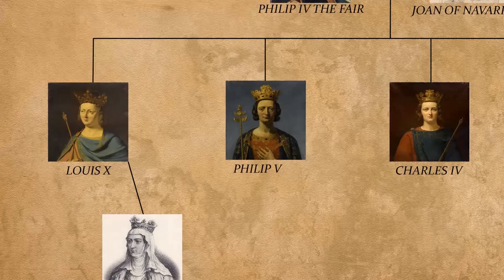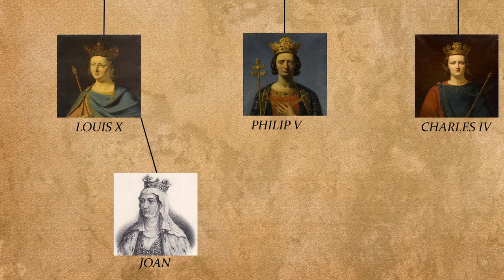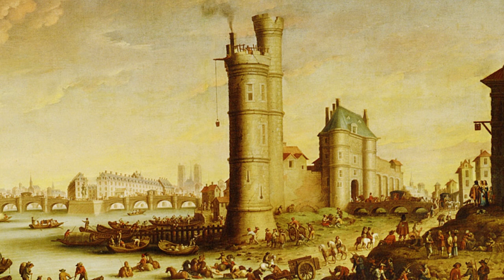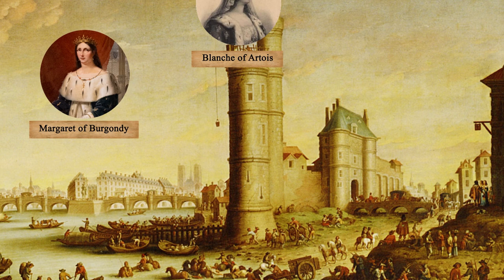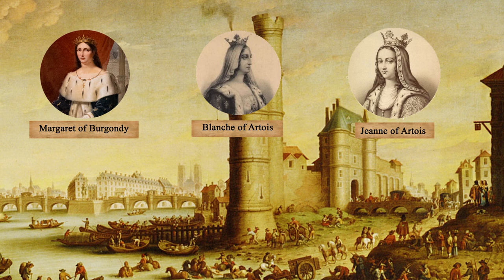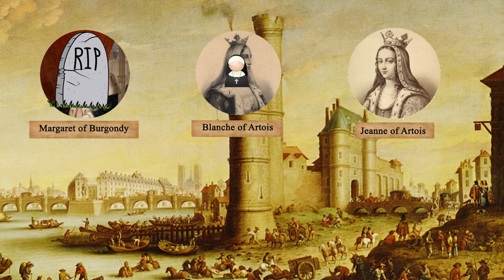The eldest son, Louis, future Louis X the Quarrelsome, was married to Margaret of Burgundy and had only one daughter, Joan. Then a royal scandal erupted — the Affaire de la Tour de Nesle. The three daughters-in-law of the King were caught in adultery. Princesses Margaret of Burgundy and Blanche of Artois had taken two young squires as lovers. The third, Jeanne of Artois, wife of Philip the Tall, was not involved but was aware. The two squires were arrested, swiftly judged, and executed, while the adulterous princesses were arrested and imprisoned. Margaret of Burgundy died of cold at Château-Gaillard, and Blanche of Artois served ten years in prison before ending her life in a convent. This was a blow to the Capetian dynastic succession.